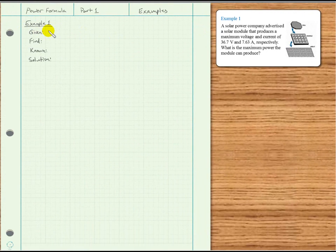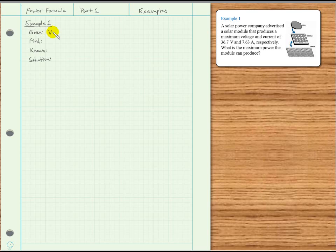Given information: we have voltage equal to 36.7 volts and current I equal to 7.63 amps. What we're asked to find is power.